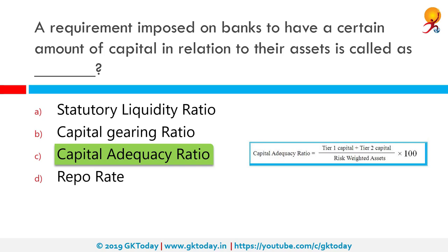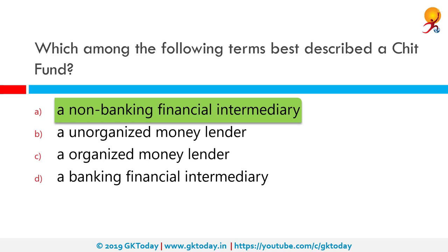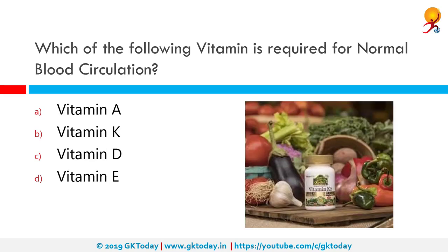Which among the following terms best describes a chit fund? The correct answer is a non-banking financial intermediary. A chit fund is a type of rotating savings and credit association system practiced in India. Chit fund schemes may be organized by financial institutions, or informally among friends, relatives or neighbors. In some variations, the savings are for a specific purpose.